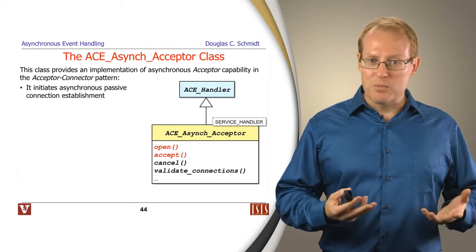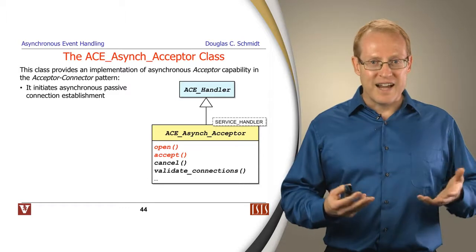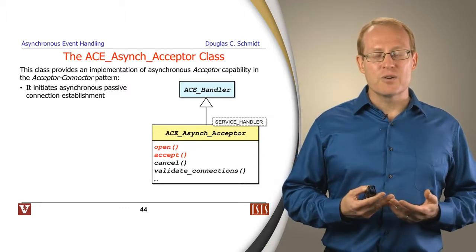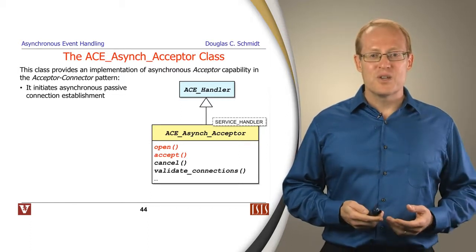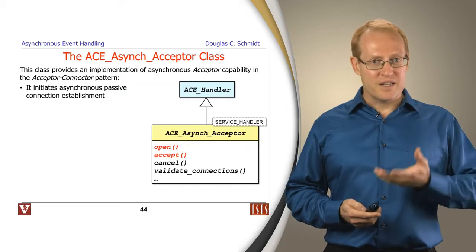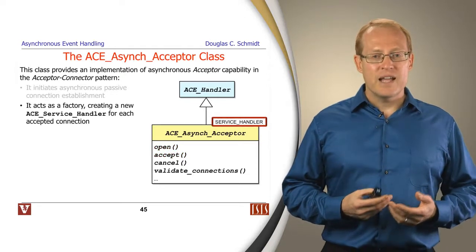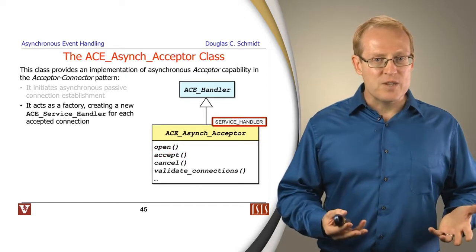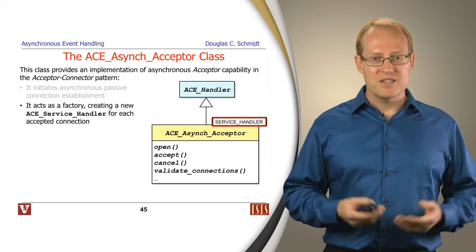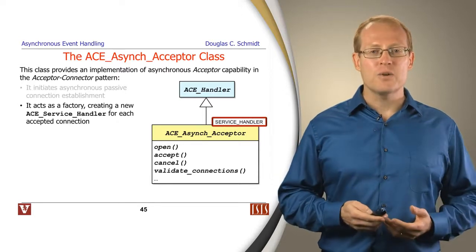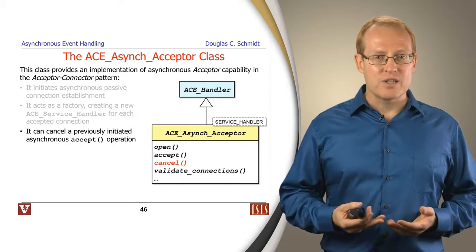The next class should be pretty clear by now. This is the ACE async acceptor. There's also an ACE async connector that is the dual of this. The ACE async acceptor is used to initiate passive connection establishment asynchronously. You can open and accept connections that come in, and those will be handled asynchronously as they complete when the clients connect. It's a factory that will create and initialize service handlers, much like the acceptors and connectors we talked about before in the ACE acceptor connector framework that's more synchronous in nature.